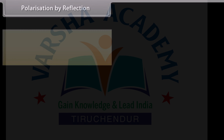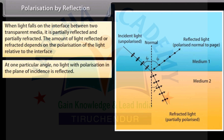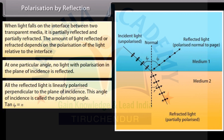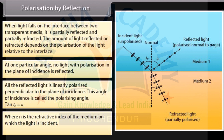Polarization by reflection. When light falls on the interface between two transparent media, it is partially reflected and partially refracted. The amount of light reflected or refracted depends on the polarization of the light relative to the interface. Consider unpolarized light striking the interface between medium 1 and medium 2. At one particular angle, no light with polarization in the plane of incidence is reflected. All the reflected light is linearly polarized perpendicular to the plane of incidence. This angle of incidence is called the polarizing angle. Tan(Ip) = N, where N is the refractive index of the medium. This equation is known as Brewster's law.